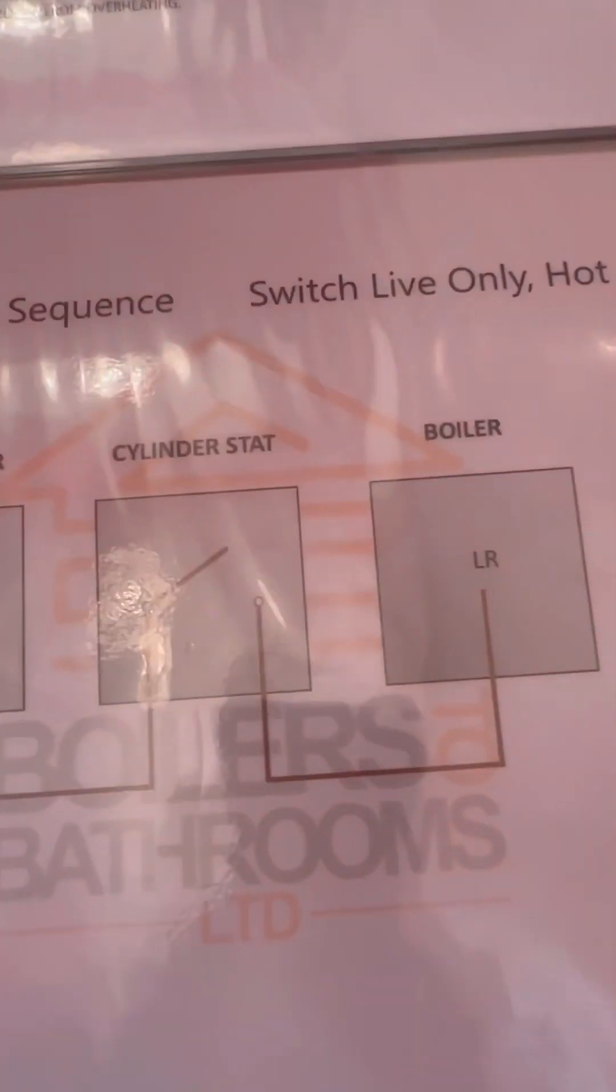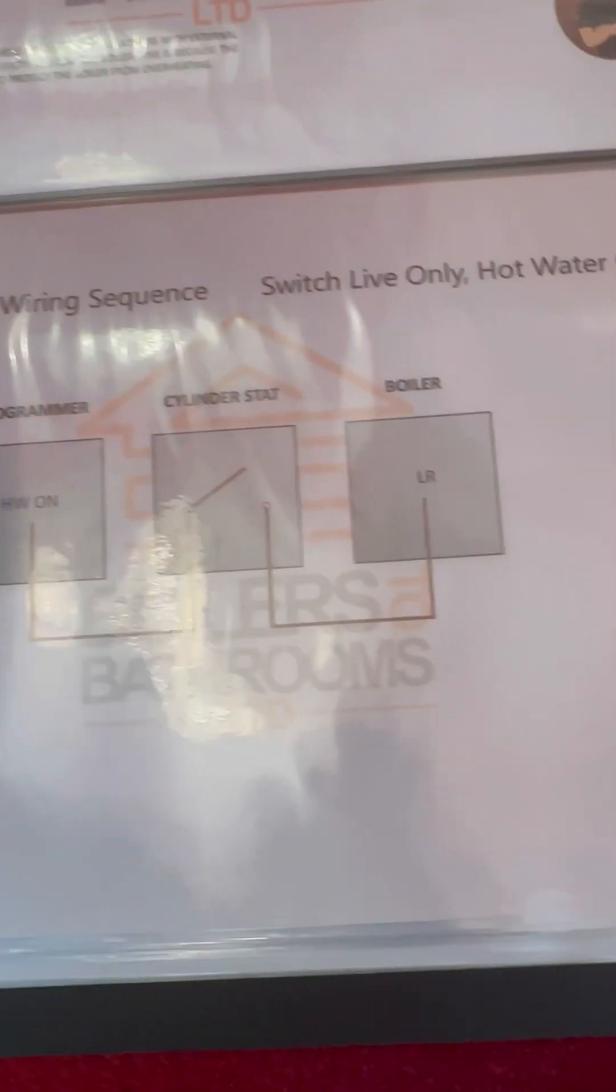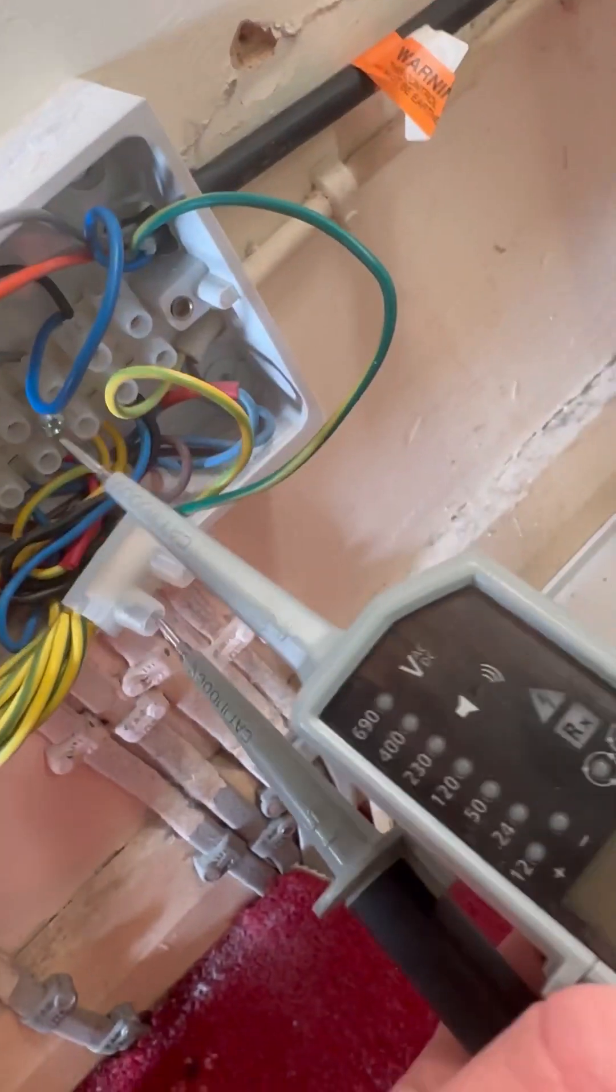So we'll go for it a bit more in depth. Switch live wire only hot water on. So what that means is we don't get 240 on gray if the programmer's doing its job properly and the cylinder stat's okay.